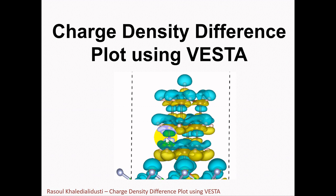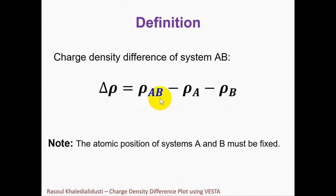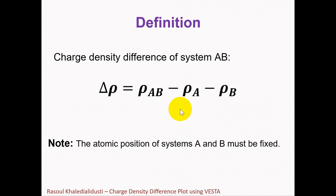Now in this section I'm going to talk about how we can plot charge density difference using VESTA. We generally define the charge density difference of system AB as: charge density difference = charge density(AB) − charge density(A) − charge density(B). In VASP, three calculations should be performed to obtain the charge density of AB, A, and B systems. We need three CHGCAR files containing charge density information for these three different systems. Keep in mind that in calculations of systems A and B, the atomic positions must be fixed as they are in the AB system — this is very important.